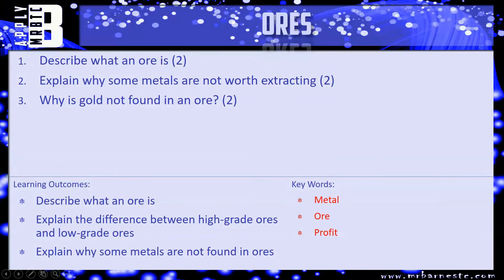Let's have a look at a couple of questions. The first one says: describe what an ore is — worth two marks, so you need two points. The second one is: explain why some metals are not worth extracting, also two marks. And then: why is gold not found in an ore for the third question. Pause the video, have a go at each now, and we'll see how you've done in a minute.